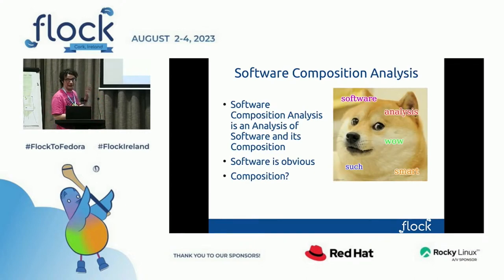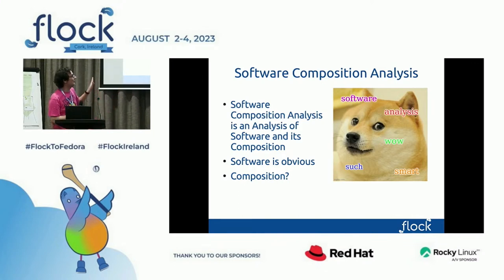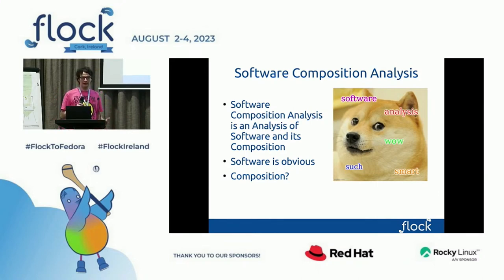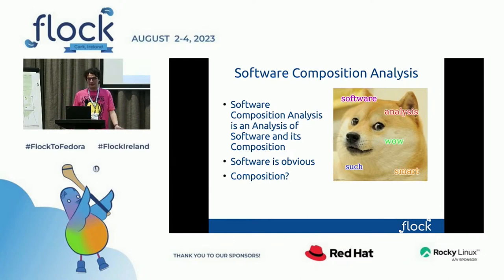There is Software Composition Analysis, which most people will call SCA. That's the analysis of software and composition. The software part is very obvious — it can be like a remote pilot, or some kind of real-time operating system. But in terms of composition, we can think about it on different levels: we can think about the dependencies, we can think about the ecosystem, documentation and repository mirroring systems, and things like that.